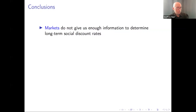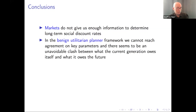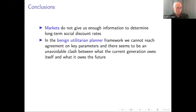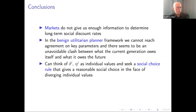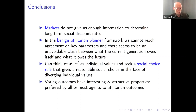Conclusions: markets really don't give us enough information to determine long-term social discount rates — there are too many problems. The benign utilitarian planner framework: we can't reach agreement on the key parameters, and there seems to be an unavoidable clash between what the current generation owes itself and what it owes the future. The alternative is to think of delta and eta as individual values and individual ethical choices, and to seek a social choice rule that gives a reasonable social choice in the face of diverging individual values. Voting outcomes have interesting and attractive properties: in particular, they're preferred by most or all agents to the utilitarian outcomes.